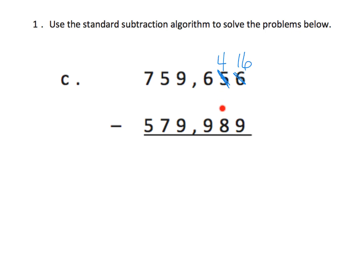Now I have four take away eight — that's not enough, so I need to go into the hundreds column. I'm going to take one of these hundreds, leaving us with five, and cash it in for ten tens. So instead of having four tens, I will now have fourteen tens.